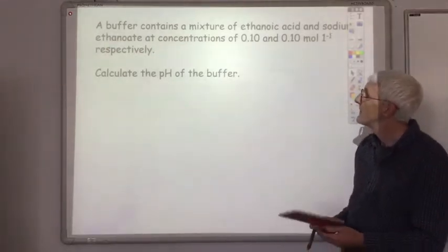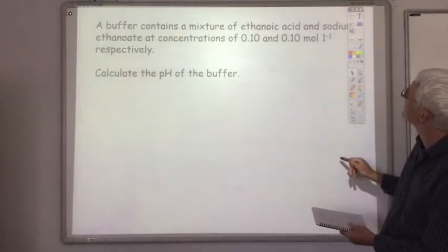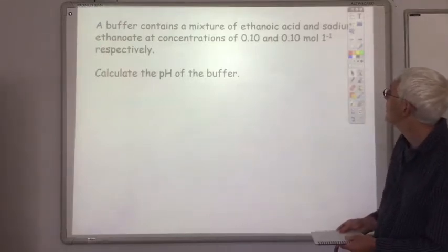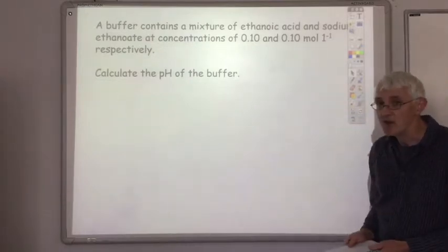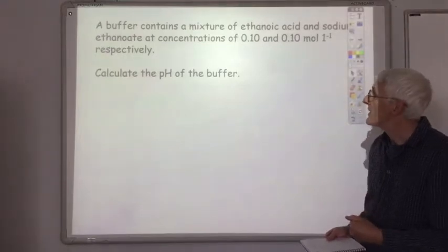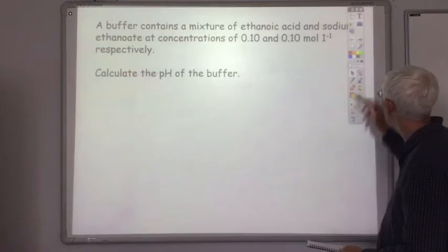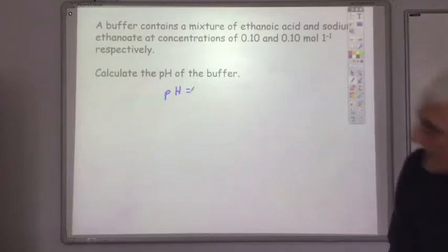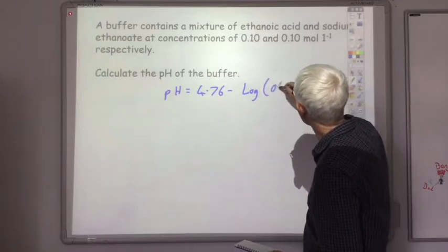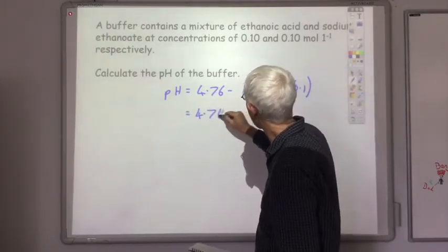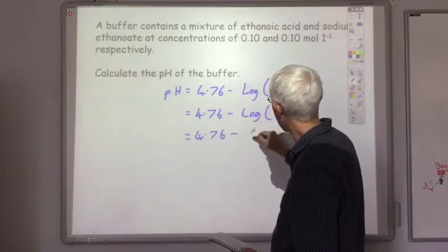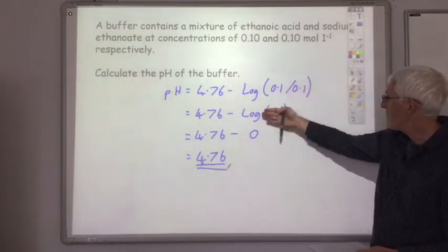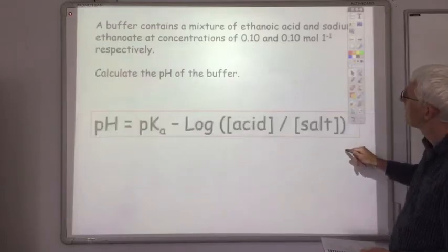So here's another one for you to try. A buffer contains a mixture of ethanoic acid and sodium ethanoate at concentrations of 0.1 and 0.1 mole per liter respectively. Calculate the pH of the buffer. So I suggest you stop the lecture, try that, and then I'll quickly run through the answer.